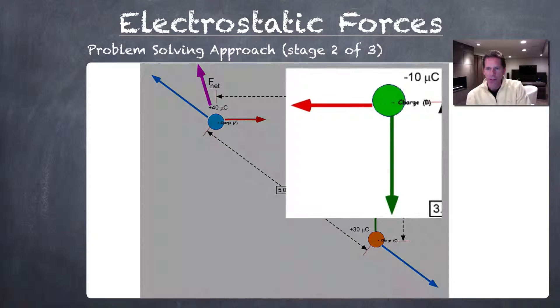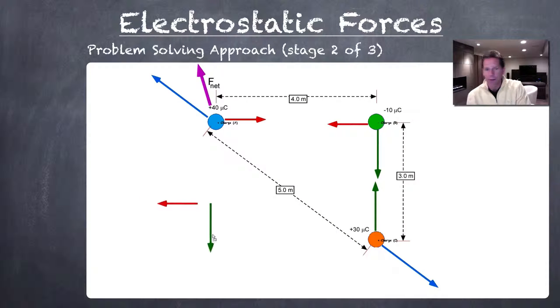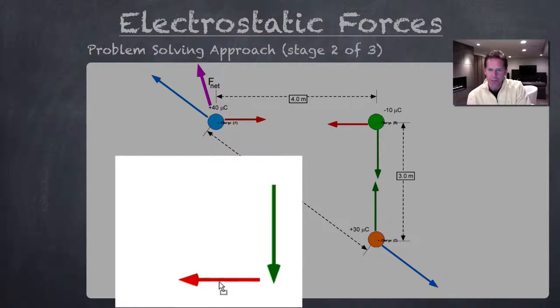Vector diagram for the negative 10 microcoulomb charge. We draw the two vectors down here at the bottom. We need to add the vectors tip to tail. Our resultant vector, which is the net force, will be from where we started to where we finished. The vector in this case would be somewhat to the west of south.